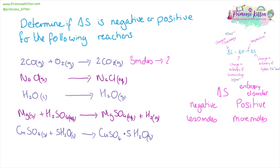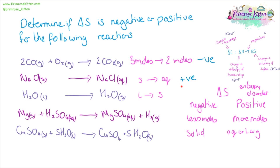In the first example, we have three moles on one side going to two moles, so delta S is becoming negative. Things are more ordered if they are solid, and less ordered if they are aqueous, liquid, or gas. Going from a solid to an aqueous gives a positive delta S. Going from a liquid to a solid gives a negative delta S. Going from solid and aqueous to aqueous and gaseous gives positive delta S. Going from solid and liquid to solid, and from six to one mole, gives negative delta S.